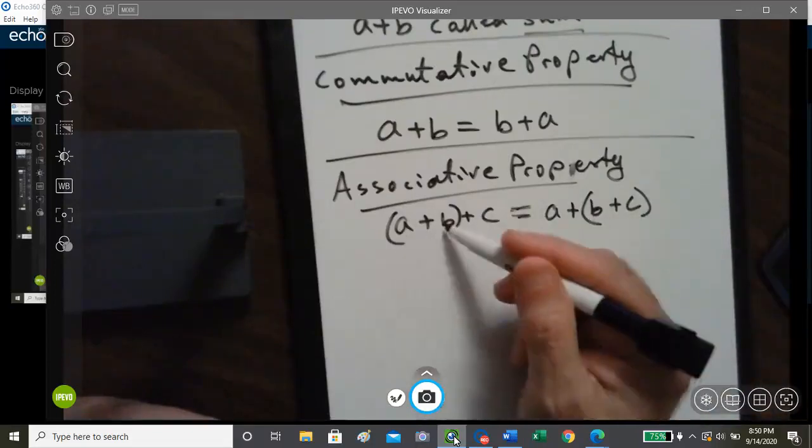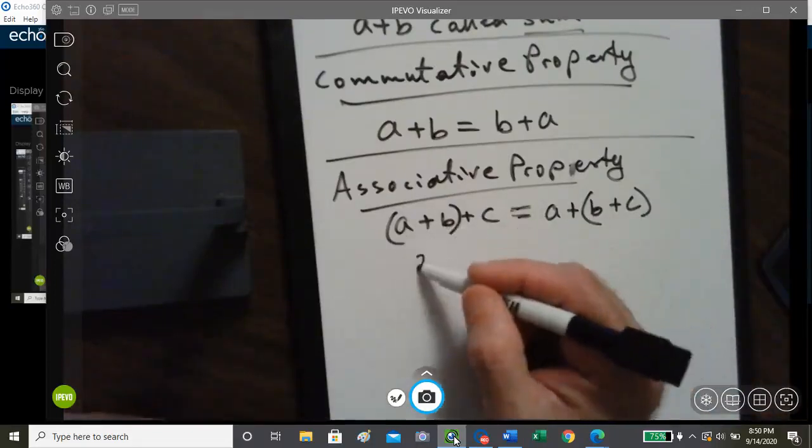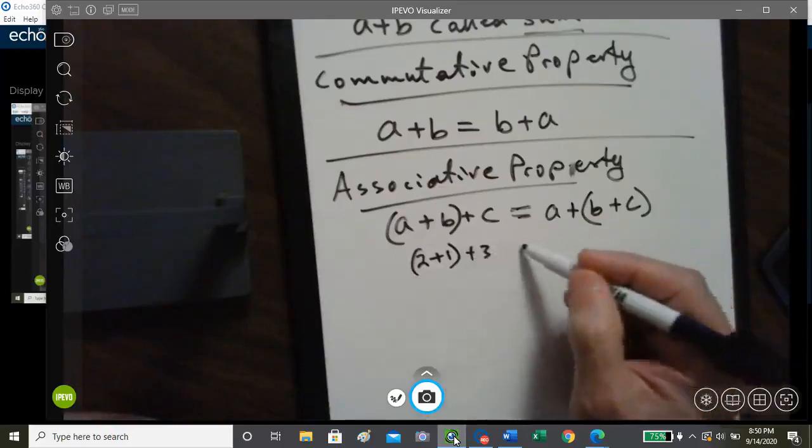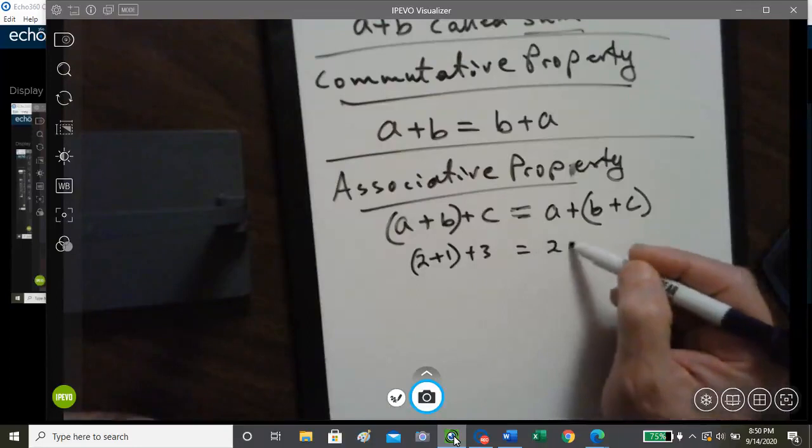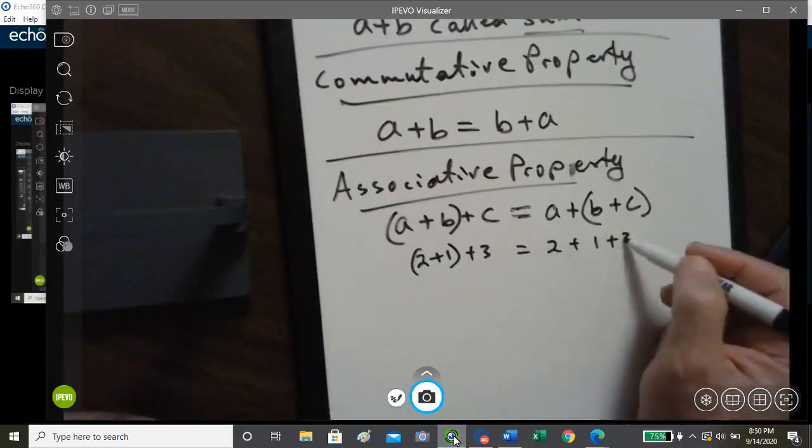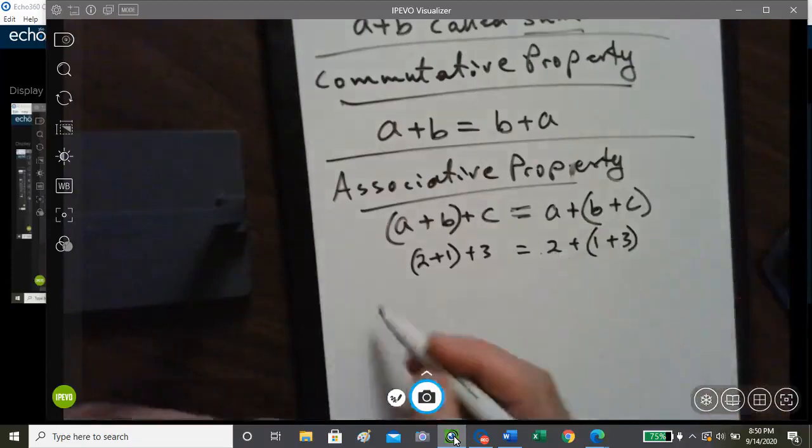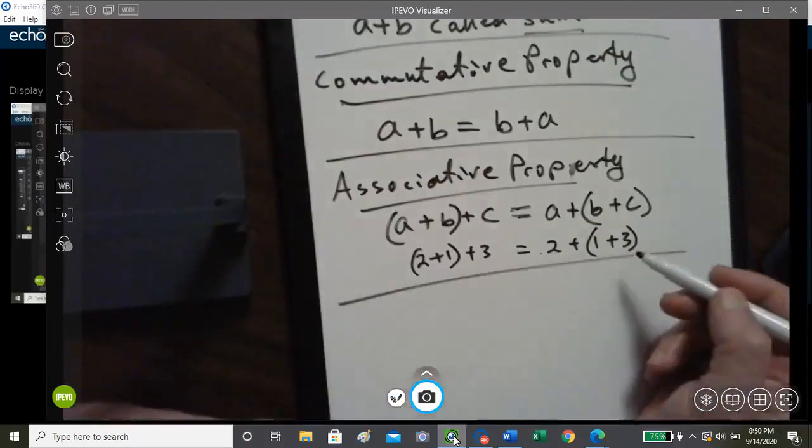So, two plus one, let's say, if we said two plus one is three, plus three is six, or if we put the parentheses around the one plus three, that's four, plus two, that's six. That's the associative property of Addition.